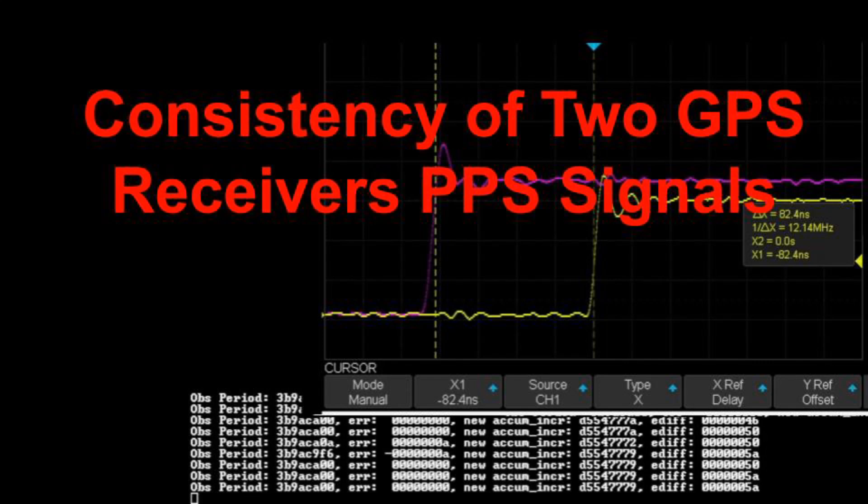This video is about measuring the consistency of the pulse per second or PPS signals from two GPS receivers. I say consistency because measuring the accuracy of the pulse per second signals is hard, precisely because the signals are supposedly very accurate indeed, more accurate than my test equipment.